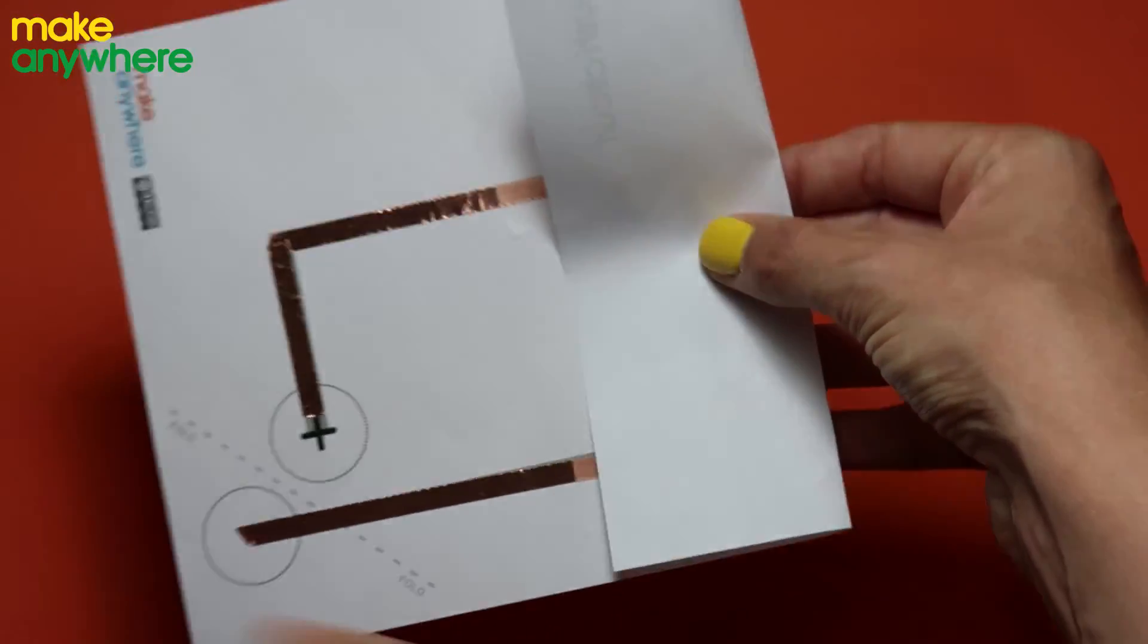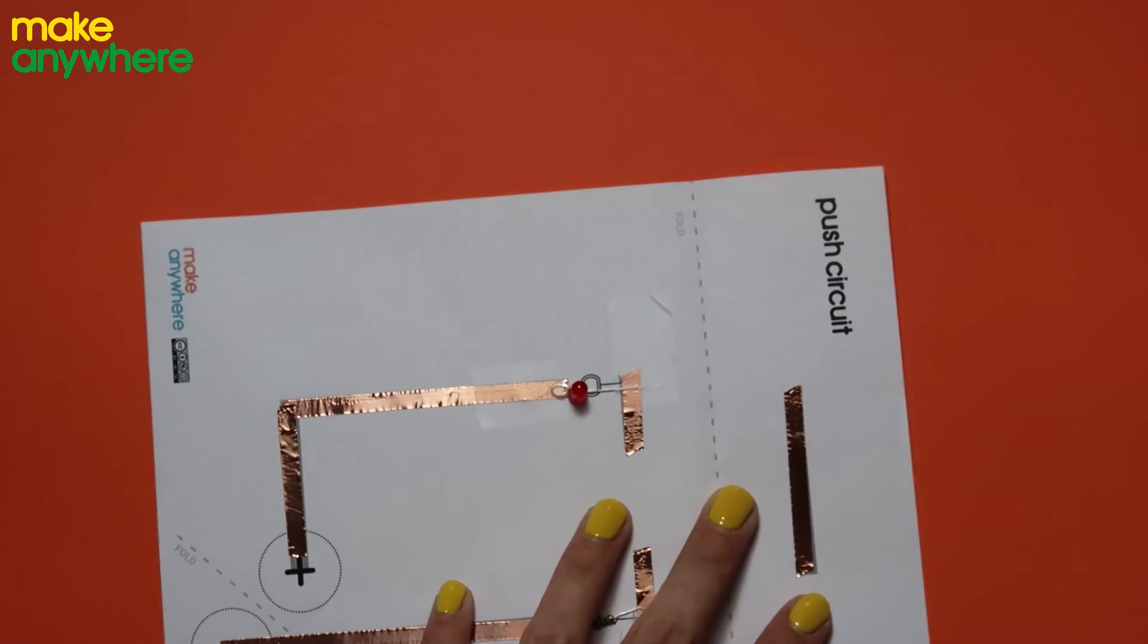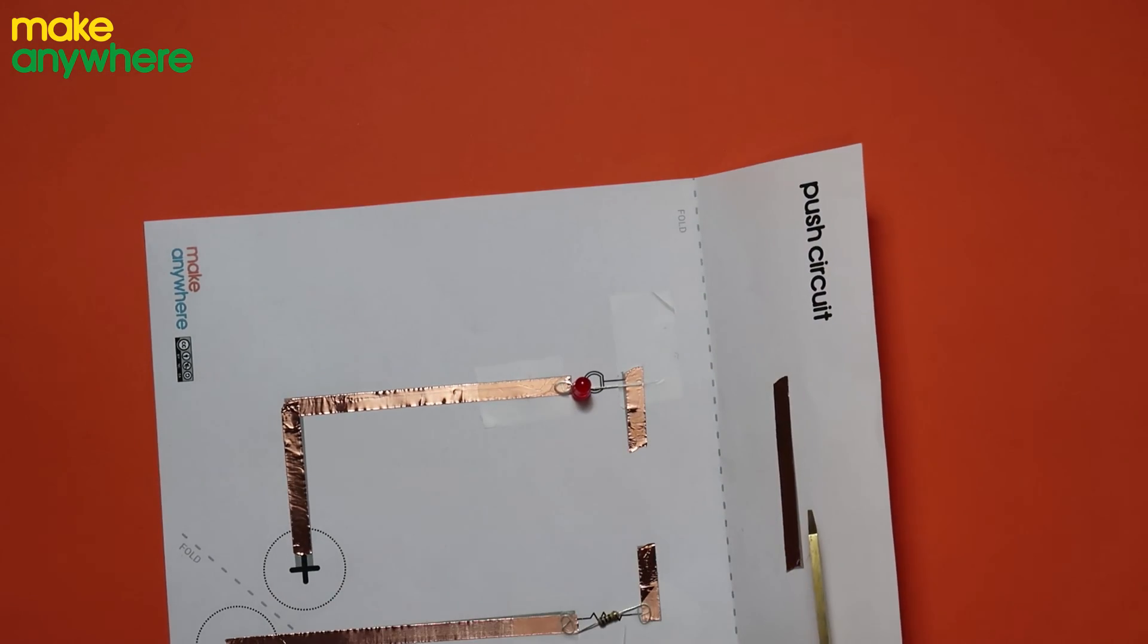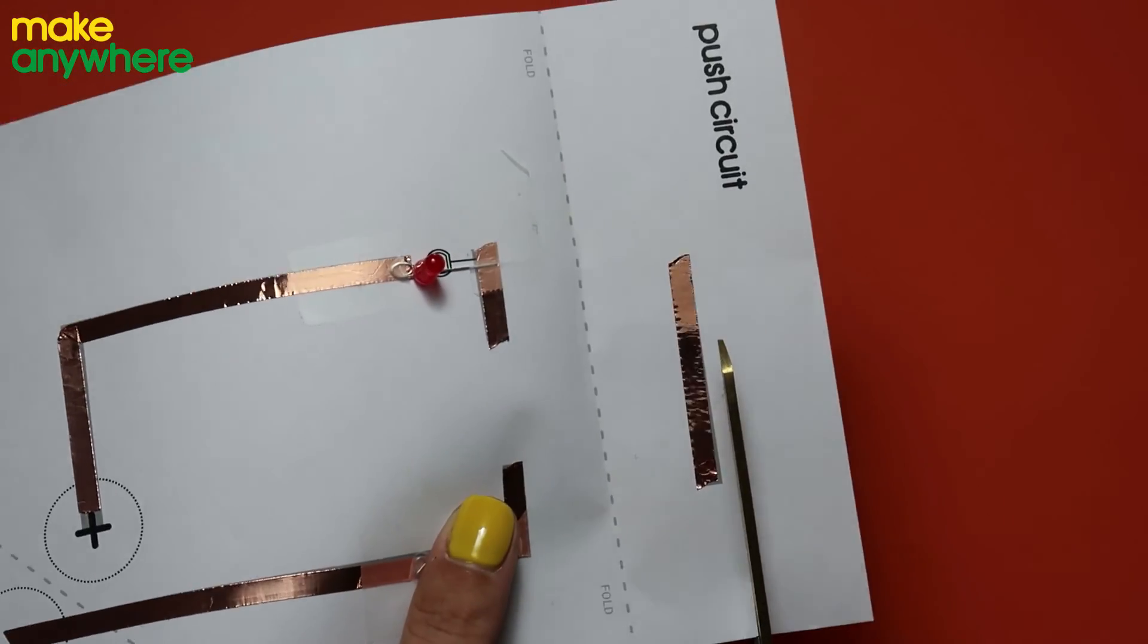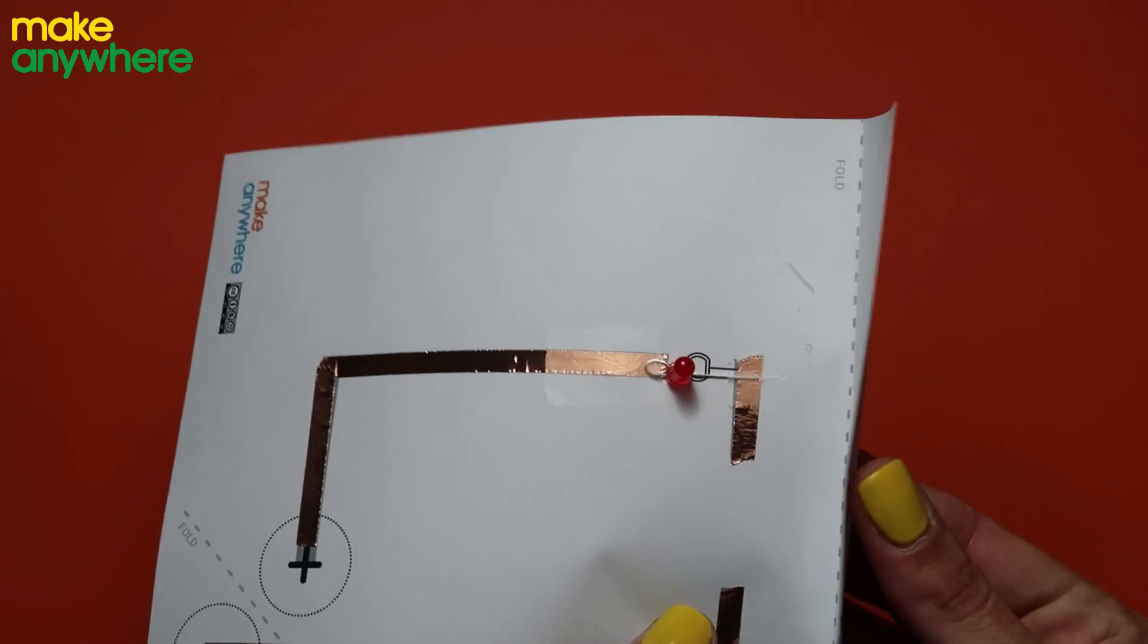We've got an excess bit of paper here so take your scissors and cut close to your copper tape cutting that piece off.